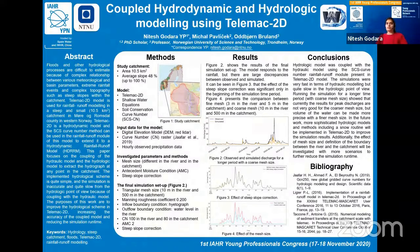The final simulation results are shown in figure number 2, and the setup for the simulation is mentioned there. Although the model responds to rainfall correctly, the results for peak discharges are not very good for the coarser mesh size. However, considering the results from figure 4, the volume of water can be made more precise with a finer mesh size.